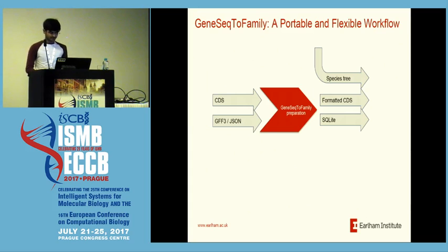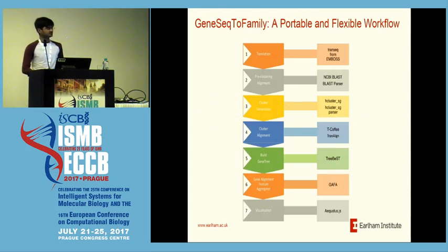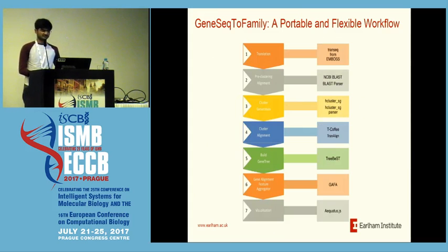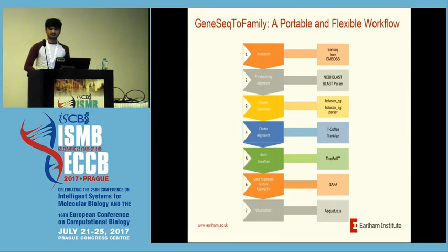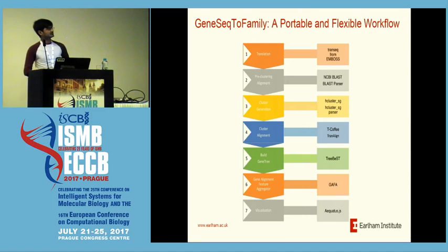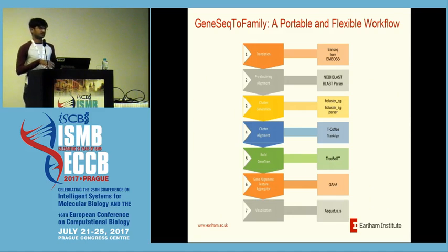From the next step, the workflow starts. It's a very simple workflow with six steps only. First, we start with the translation of CDS into protein sequences. Then we do pairwise alignment using BLAST and a BLAST parser. The BLAST parser converts the BLAST result into the input format for the next tool, HCluster SG. HCluster SG is a hierarchical clustering algorithm that generates gene clusters for each family. From the next step, the workflow goes parallel.